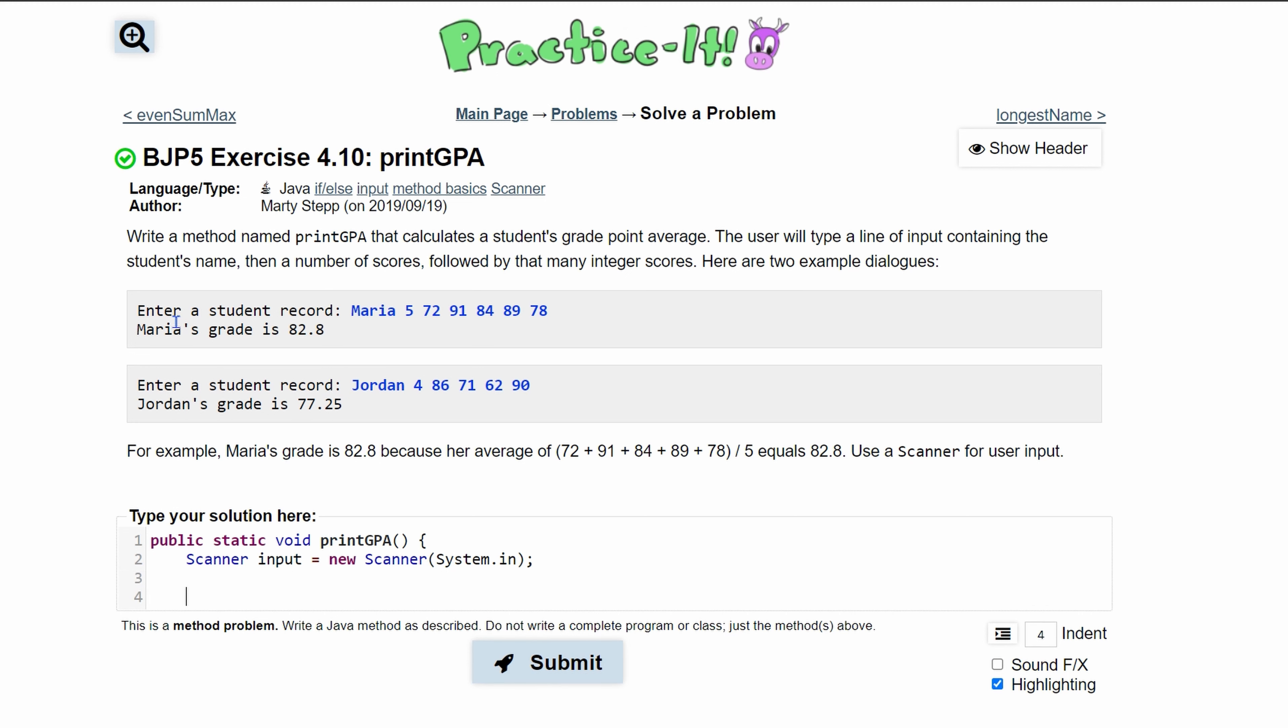Now we are going to prompt the user to enter a student's record. We're going to do this with System.out.print. The reason we're doing print and not println is because we need all of this on the same line. We'll add a space and end this line.